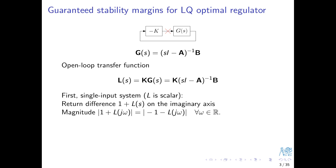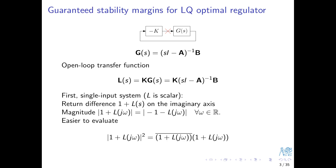This invokes our old friend the Nyquist criterion for closed-loop stability. When evaluating an absolute value of a complex number, it's often easier to evaluate its square. The square of an absolute value is obtained by multiplying the number with its complex conjugate.